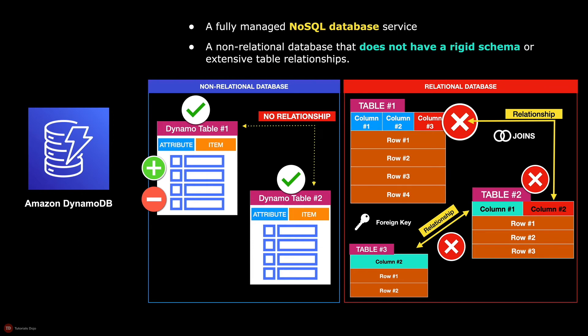In DynamoDB, you can store complex hierarchical data within a single item and store related items on the same table.